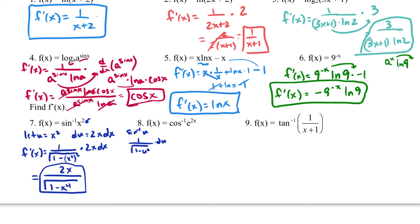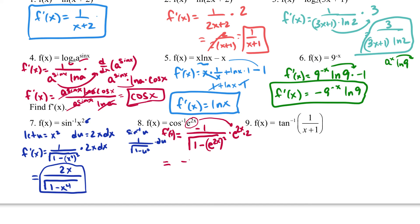For this next one, the derivative of arccos with u = e^(2x): f′(x) is negative 1 over the square root of (1 − (e^(2x))²) times the derivative of e^(2x), which is e^(2x) times 2. Cleaning this up gives negative 2e^(2x) over the square root of (1 − e^(4x)).